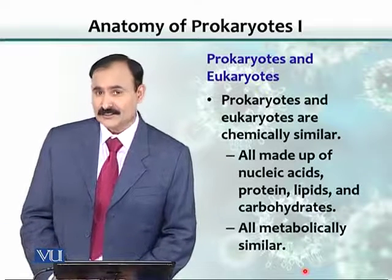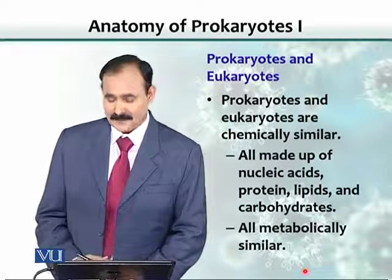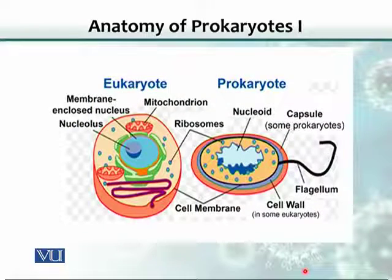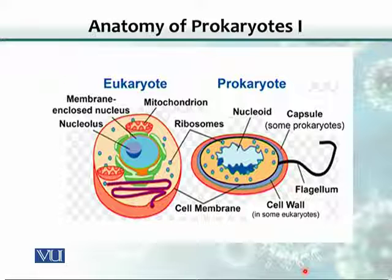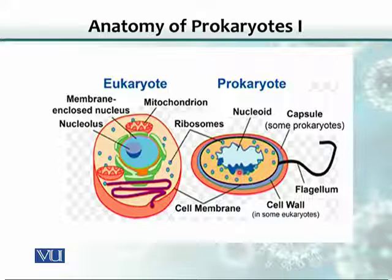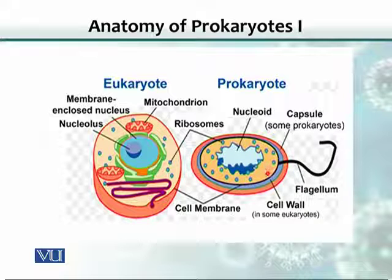So what are those structural differences? Despite being chemically the same, what are those structural differences by which we can differentiate between prokaryotes and eukaryotes? As you can see here, if you look at the cells of a prokaryote and a eukaryote, the nucleus is not very defined in prokaryotes as it is in eukaryotes. There is a nucleoid — just a space where the nucleus most likely is. Similarly, there are differences in flagella and cell wall.